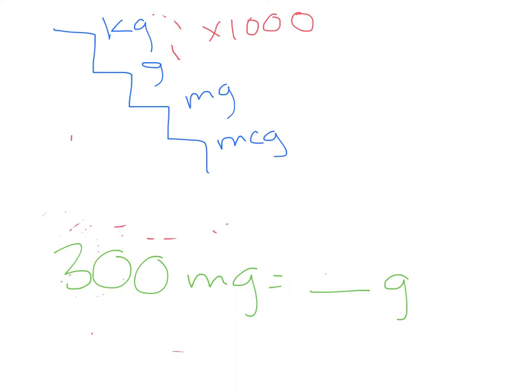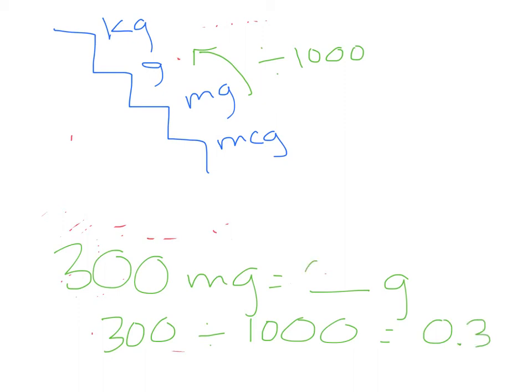According to our stair step method, milligrams to grams, we're going up one step. Up means to divide by 1000, so if I take 300 and divide it by 1000 and plug that into my calculator, that's going to give me 0.3. So my answer is 0.3 grams.